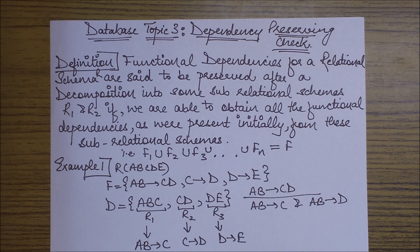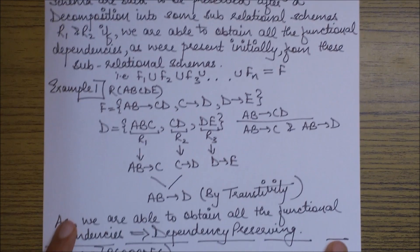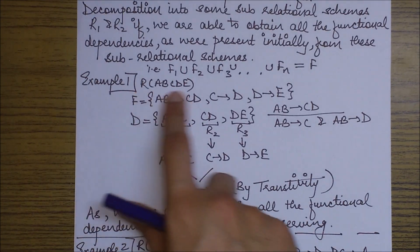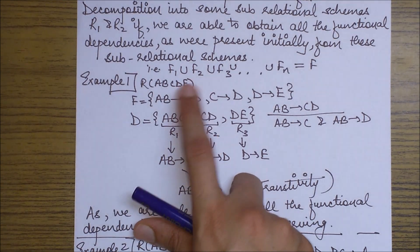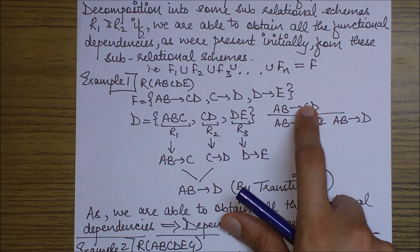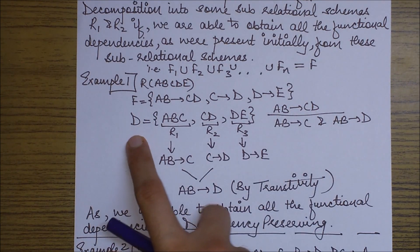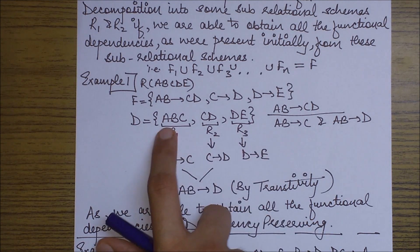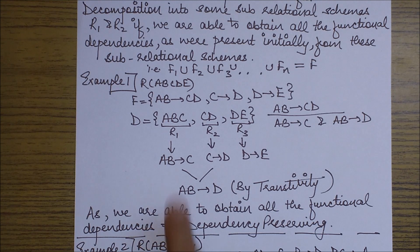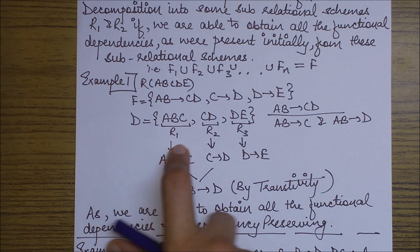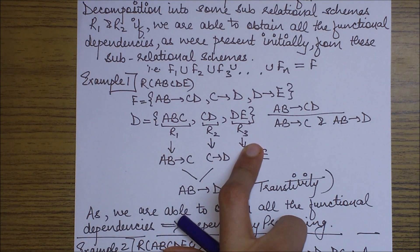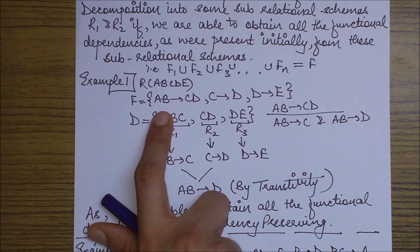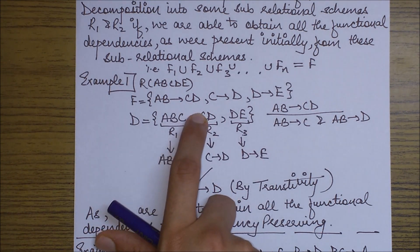Let's see this with the help of an example. In this example we have the relational schema ABCDE, a functional dependency set represented by F, and a decomposition set. As you can see, we have three decomposition sub-relations which we can name R1, R2, and R3. We also notice there is a functional dependency AB goes to CD, which is a combination of two functional dependencies.